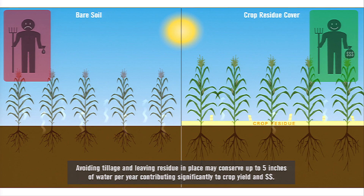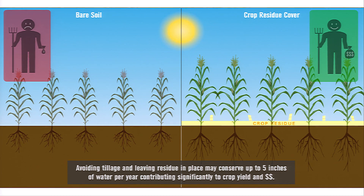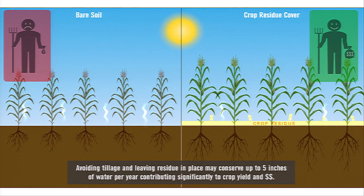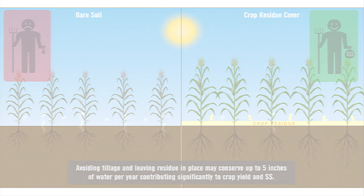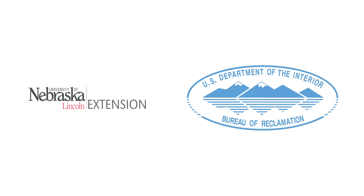Avoiding tillage and leaving residue in place may conserve up to 5 inches of water per year, contributing significantly to crop yield and the bottom line.